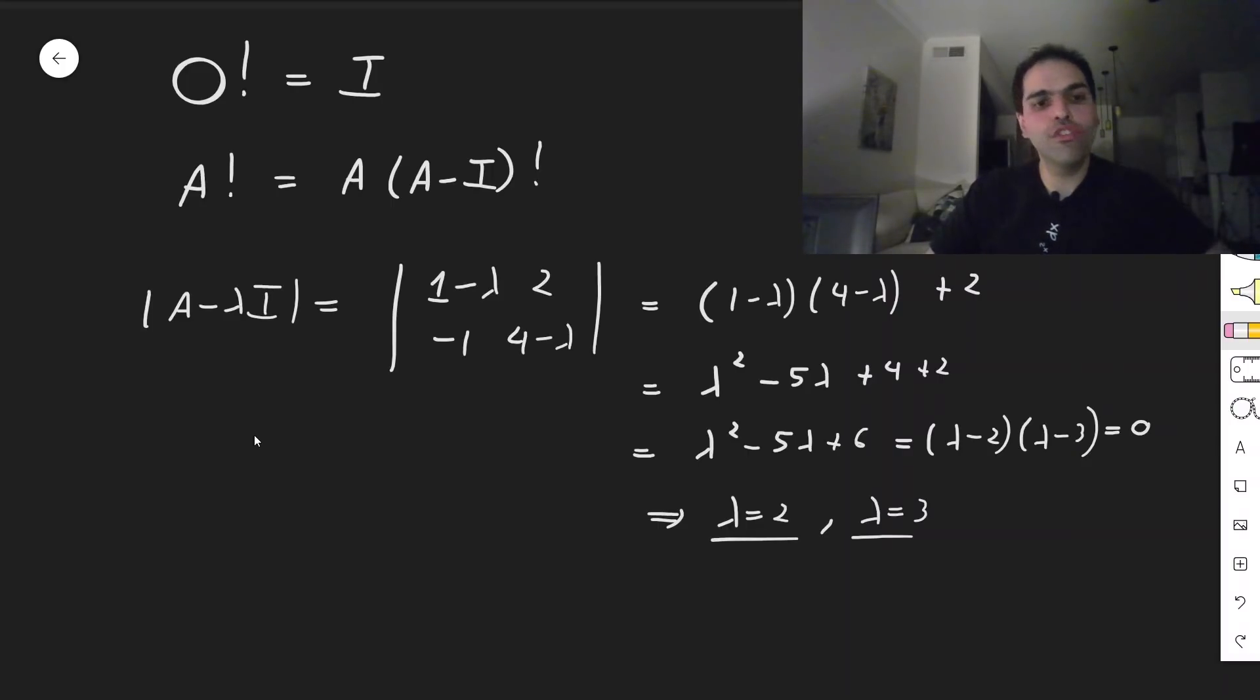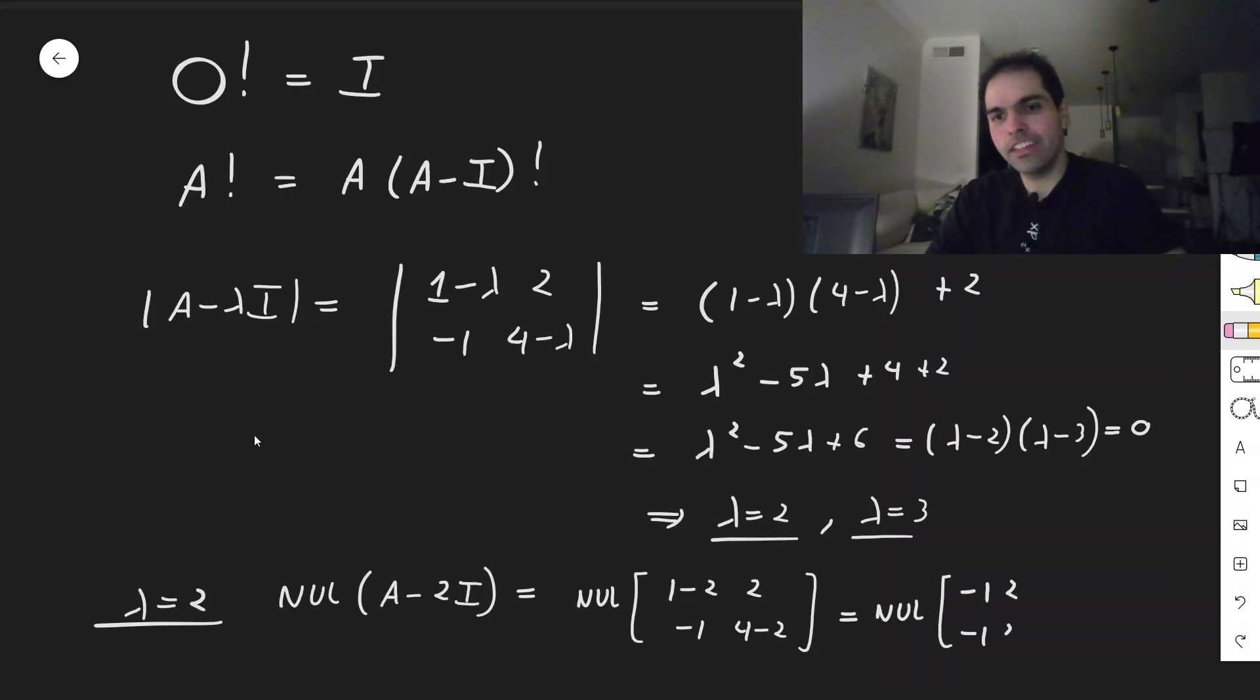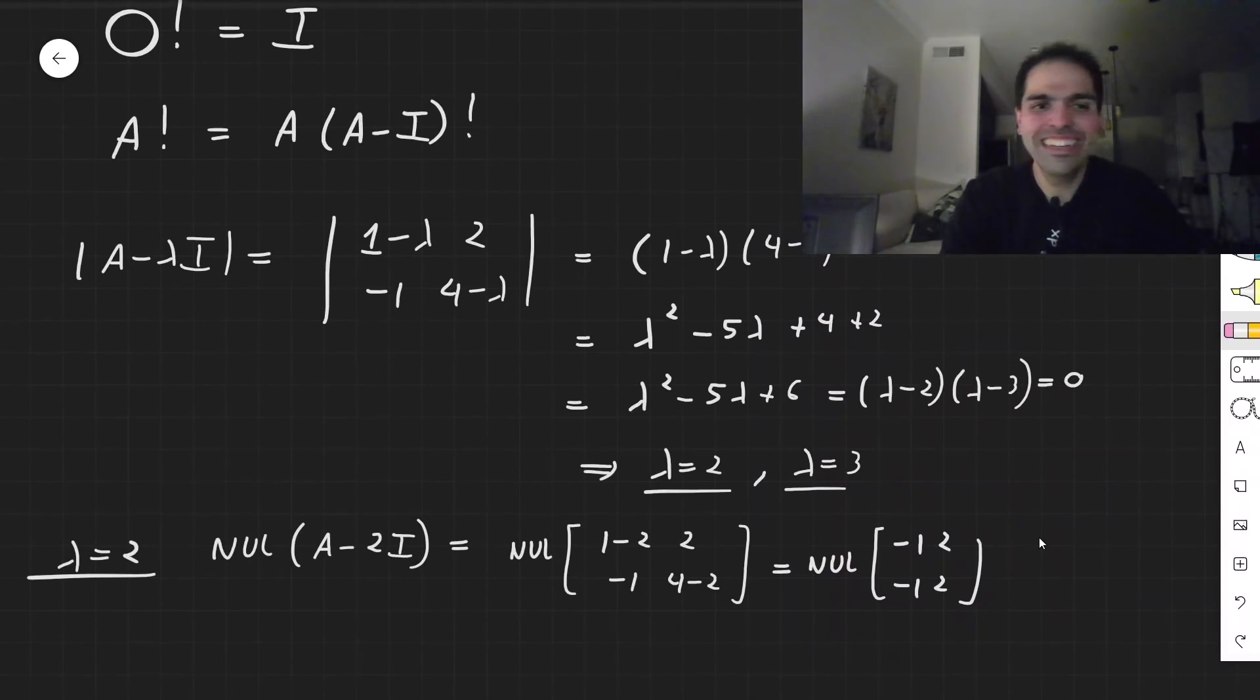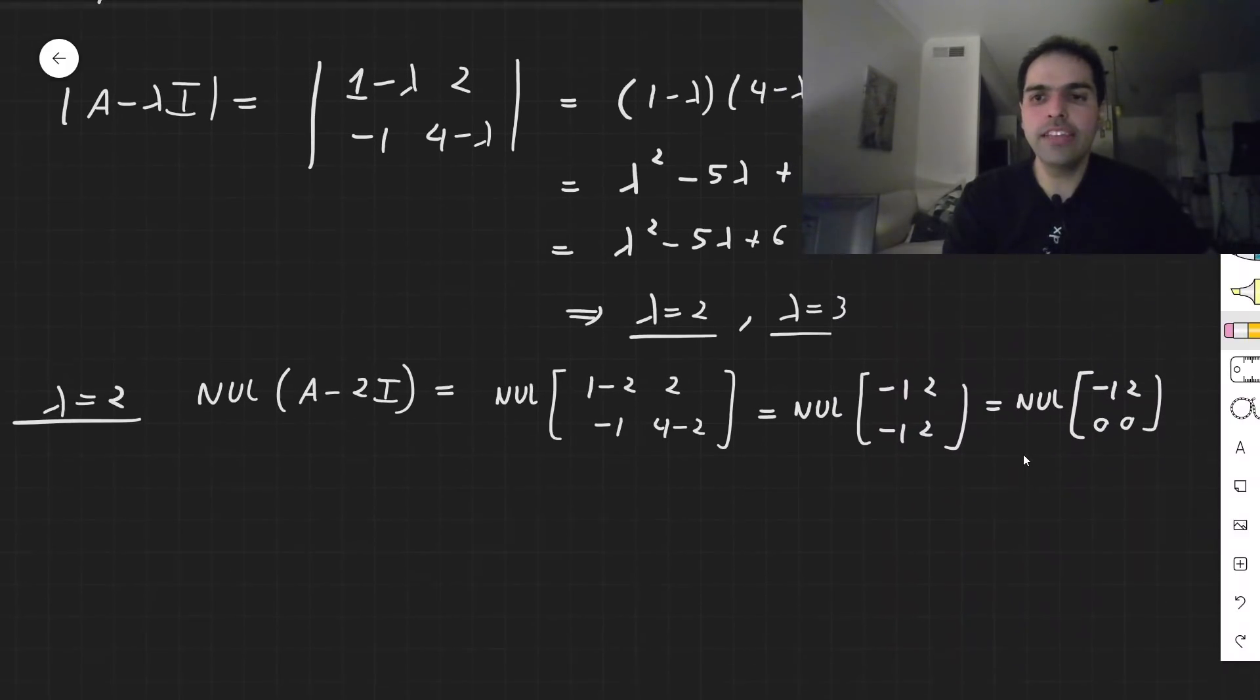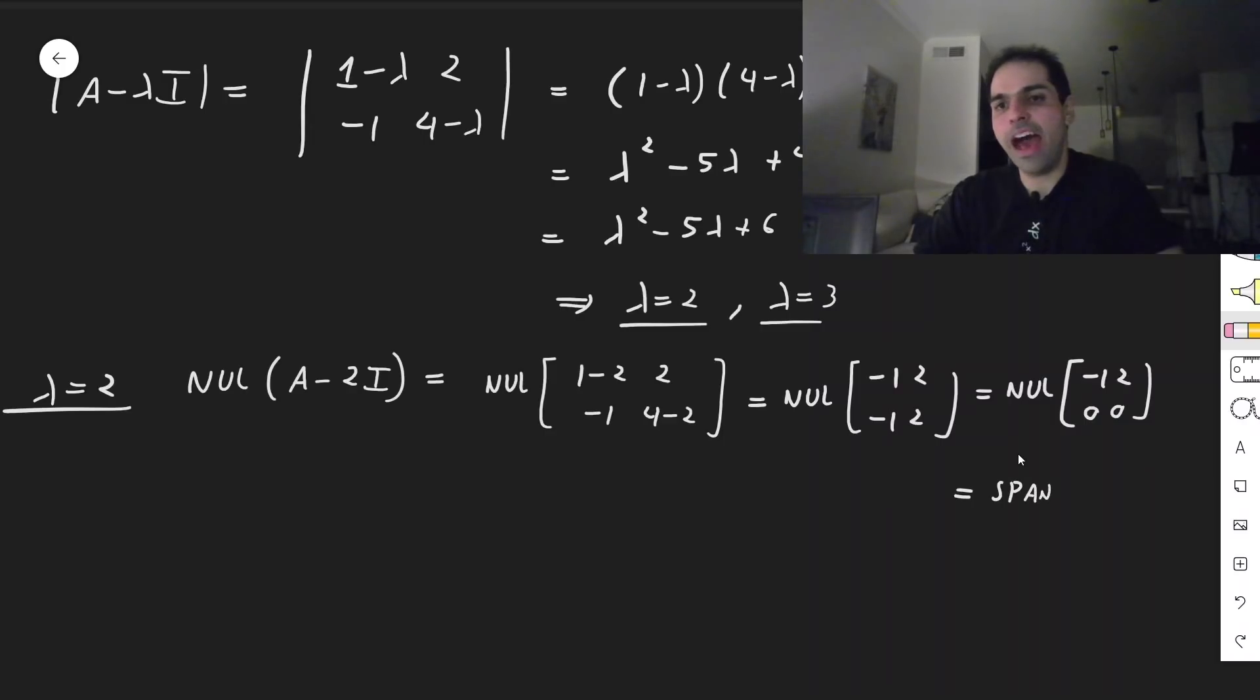And then, for each eigenvalue, you find a corresponding eigenvector. So I'll just do it for λ = 2. Here, all you need to do is calculate the null space of A - 2I, which just means plug in λ = 2 here. So here, the null space of [1 - 2, 2; -1, 4 - 2]. And that becomes the null space of [-1, 2; -1, 2]. Oh, how nice. They simplify. So that's good. And that becomes the null space of [-1, 2; 0, 0]. And then you can set up the system and set it equal to [0; 0]. Or just think, which combination here would give you 0? Well, 2 times -1 plus 1 times 2 is 0. So essentially, this just becomes the span of [2; 1].